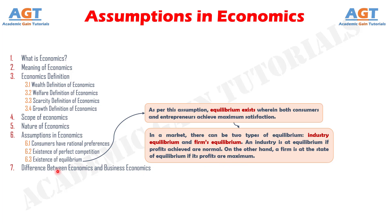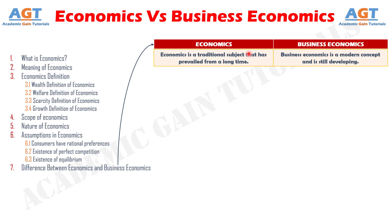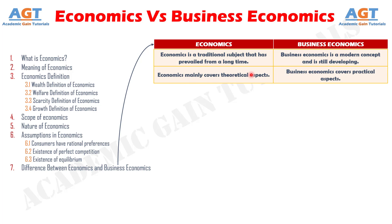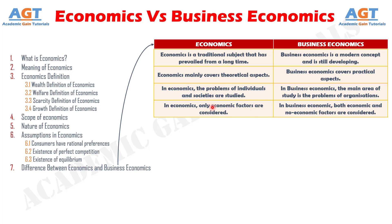Finally let's learn the difference between economics and business economics. Difference one: economics is a traditional subject that has prevailed from a long time, whereas business economics is a modern concept and is still developing. Difference two: economics mainly covers theoretical aspects, whereas business economics covers practical aspects. Difference three: in economics, the problems of individuals and societies are studied, whereas in business economics, the main area of study is the problems of organizations. Difference four: in economics, only economic factors are considered, whereas in business economics, both economic and non-economic factors are considered.